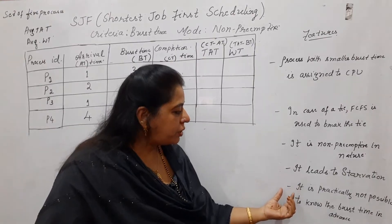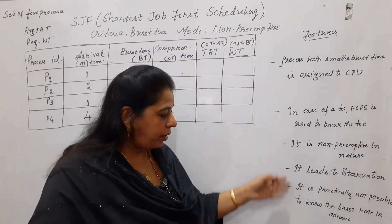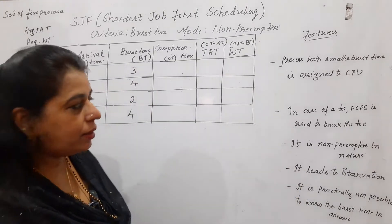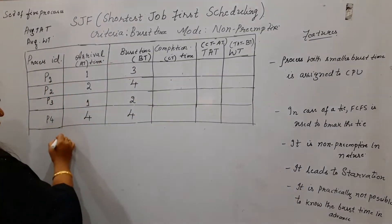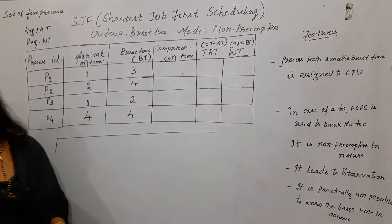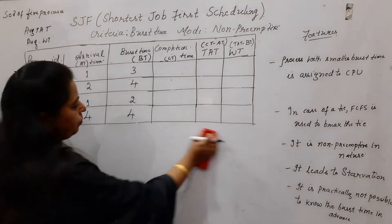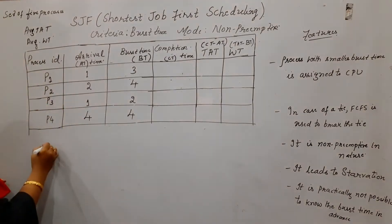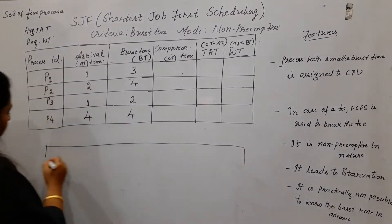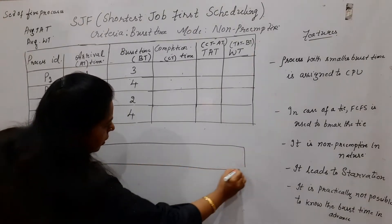It leads to starvation, and it is practically not possible to know the burst time in advance. I'll explain these two points at the end of the session, once we complete writing the Gantt chart and calculating the different times.